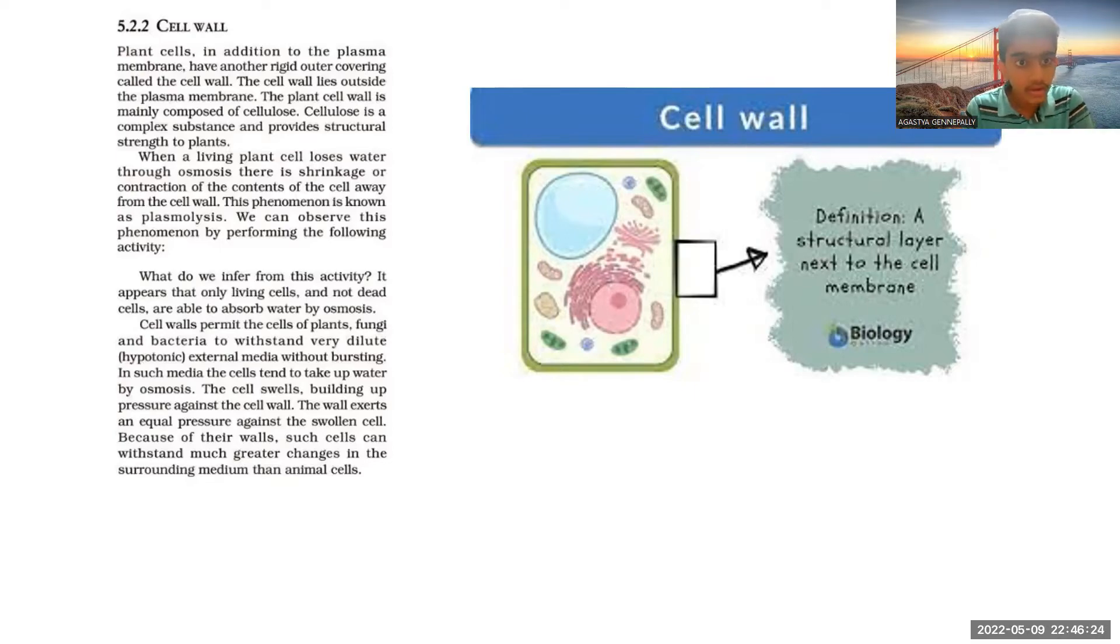Osmosis occurs in the cell wall too. When a living plant cell loses water through osmosis, there is shrinkage or contraction of the contents of the cell away from the cell wall. This phenomenon is known as plasmolysis.